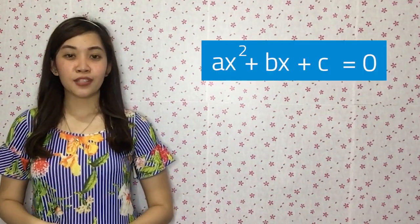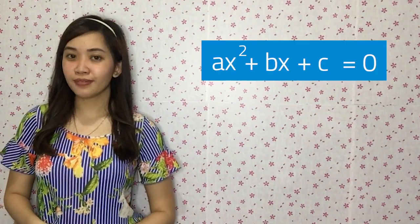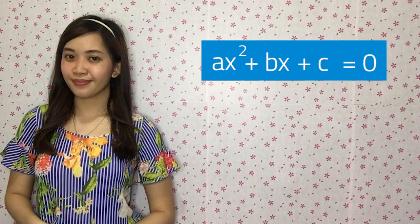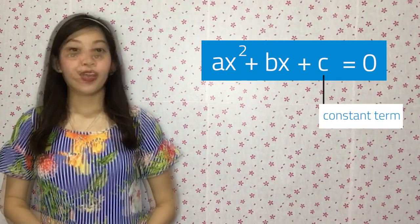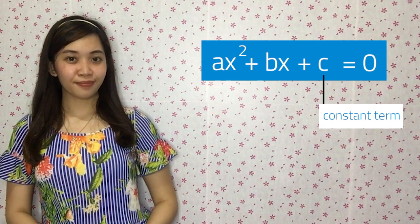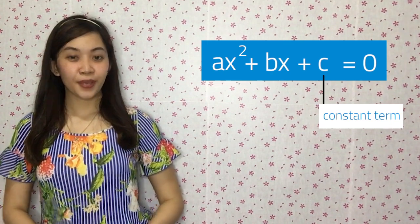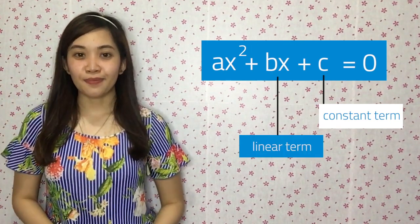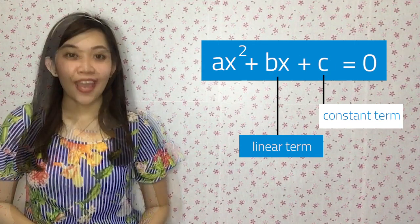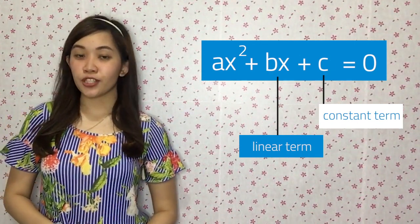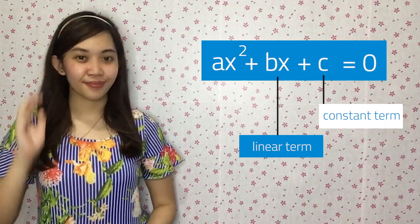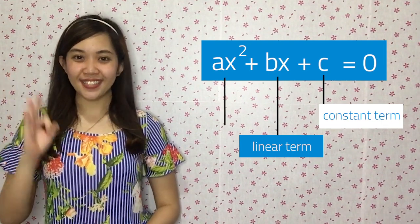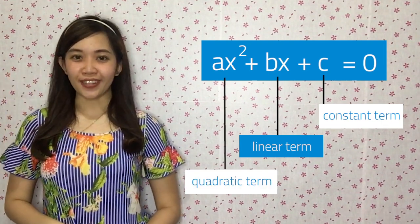Can you tell me what is the constant term in this equation? Correct, it's c. How about the linear term? Great, it's bx. And of course, which is the quadratic term? Fantastic, it's ax squared.